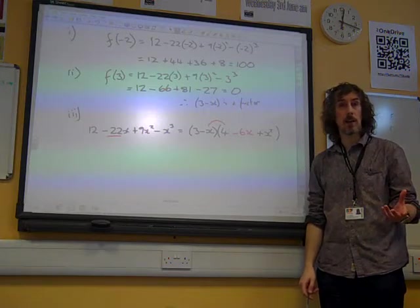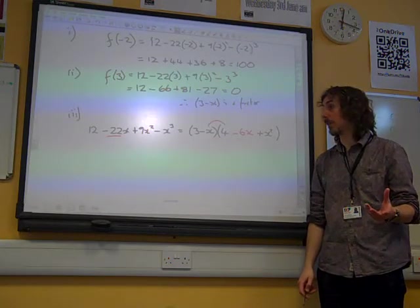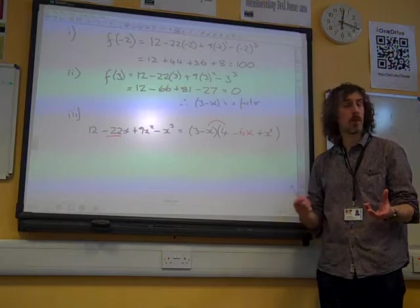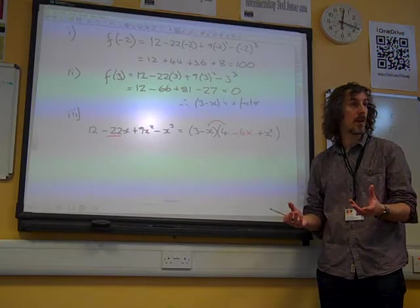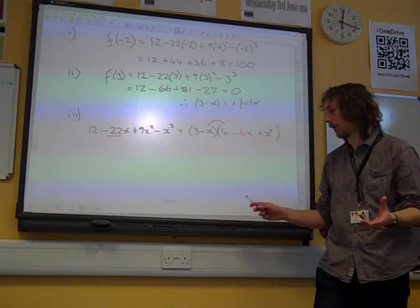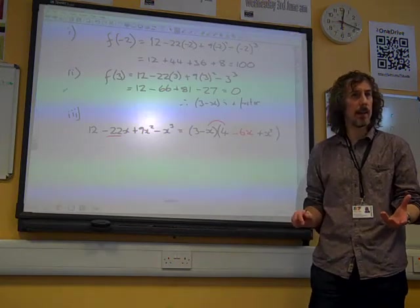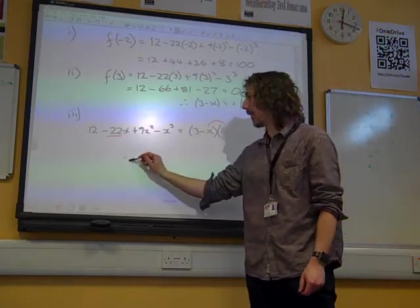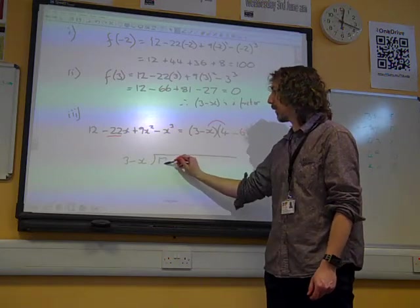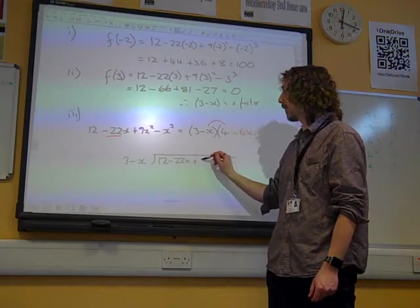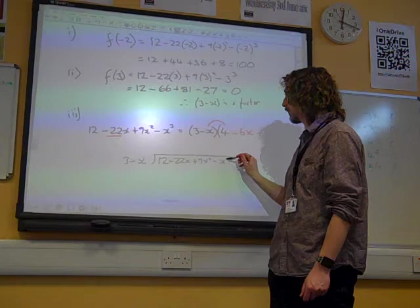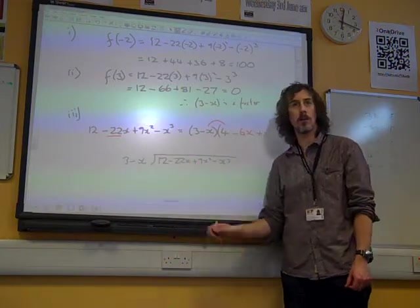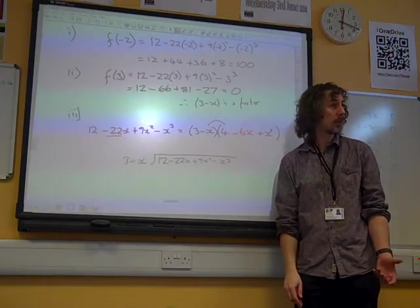One thing I really liked, I don't think it was in here, I think it was in the other group, was that somebody just went in for a long division with this and adapted our long division method that we'd used really, really neatly. They did 3 minus x into 12 minus 22x plus 9x squared minus x cubed, and did the whole long division thing with that. And it worked really nicely.